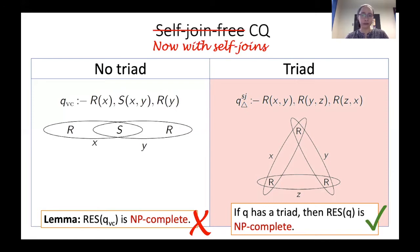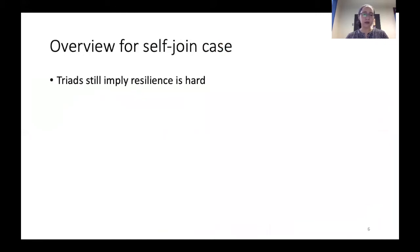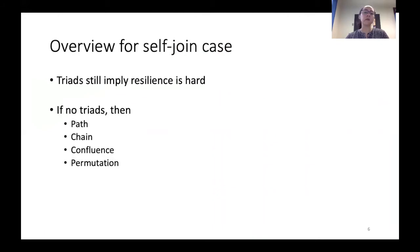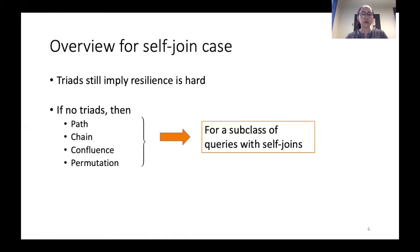So the absence of triads no longer guarantees that the resilience is going to be polynomial. How do we move forward? The first result is that triads still imply hardness for resilience in the self-join case, and then we are left to analyze what happens when no triads exist. In the remaining of this talk, I'm going to cover four structures that we defined and that helped us characterize the complexity of resilience for queries that contain those structures. These four structures occur in a particular subclass of conjunctive queries in the self-join case that I'll define shortly.